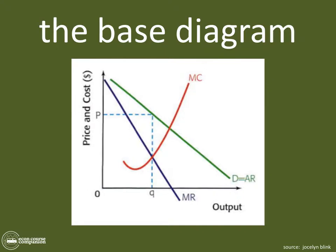My whole strategy here on EconCourse Companion is to take all of these diagrams and simplify them down to a base diagram. If you want to show profit in a monopoly, you draw this diagram. If you want to show revenue maximization in a monopoly, you draw this diagram. If you want to show productive and allocative efficiency in a monopoly, you start with this diagram — this is your best friend.